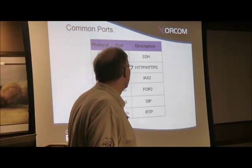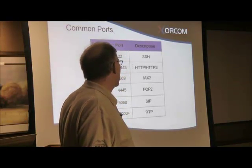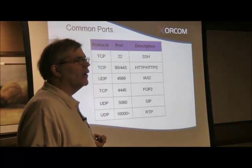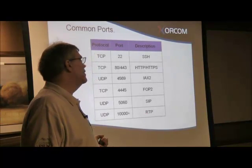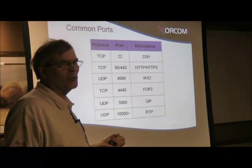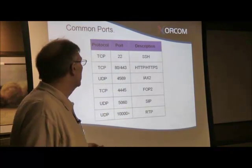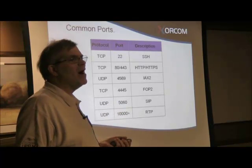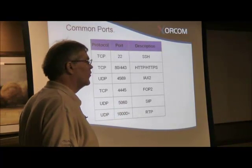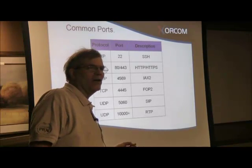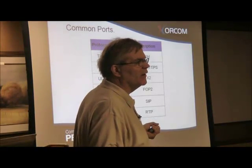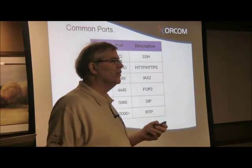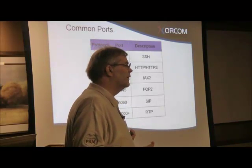The only ports you have to open are 5060 to 5064 and 10,000 to 20,000. But you can make this range smaller if you want. If you go into rtp.conf in the Asterisk directory, you can shoot that down because you only need about four to five ports per endpoint for RTP. Never make it less than 200 though. You can keep it manageable — we keep it from 10,001 to 20,000.